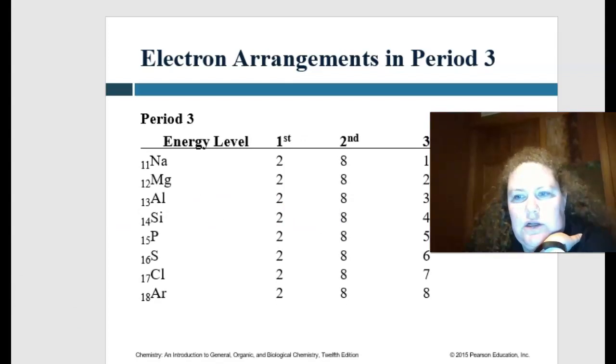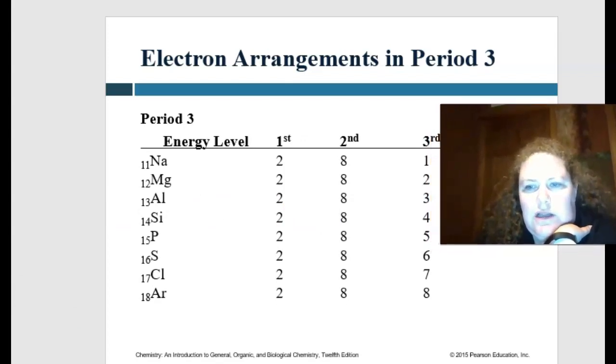And then we can go to our third level. The third level has a maximum of eight in that orbital. But before you can get into the third level, you have to fill the first and the second level before you can go into the third. It's just a way of organizing where these electrons go.